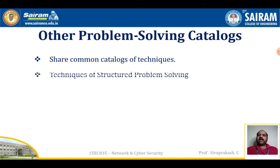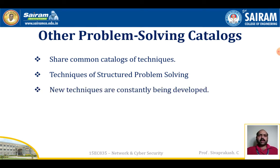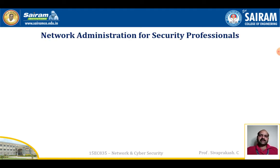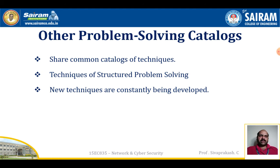New techniques are constantly being developed. Beyond problem solving, there is a new generation of techniques based on possibility thinking. More than 60 possibility thinking methods have been published using techniques such as the Circle Way, the World Café, and Open Space. Groups are encouraged to explore new possibilities based on organizational strengths rather than dwelling on problems and weaknesses.